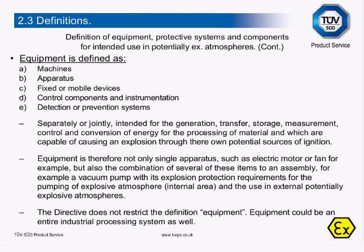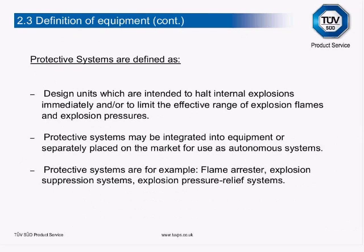Equipment is therefore not only single operators such as an electric motor or fan, but also a combination of several of these into an assembly — for example, a vacuum pump with its explosion protection requirements for the pumping of explosive atmospheres and use in external potentially explosive atmospheres. The Directive does not restrict the definition of Equipment; equipment could be an entire industrial processing system as well. A protective system is defined as design units intended to halt internal explosions immediately and/or to limit the effective range of explosion flames and explosion pressures. Protective systems may be integrated into equipment or separately placed on the market for use in autonomous systems — for example, flame arrestors, explosion suppression systems, explosion pressure relief systems.